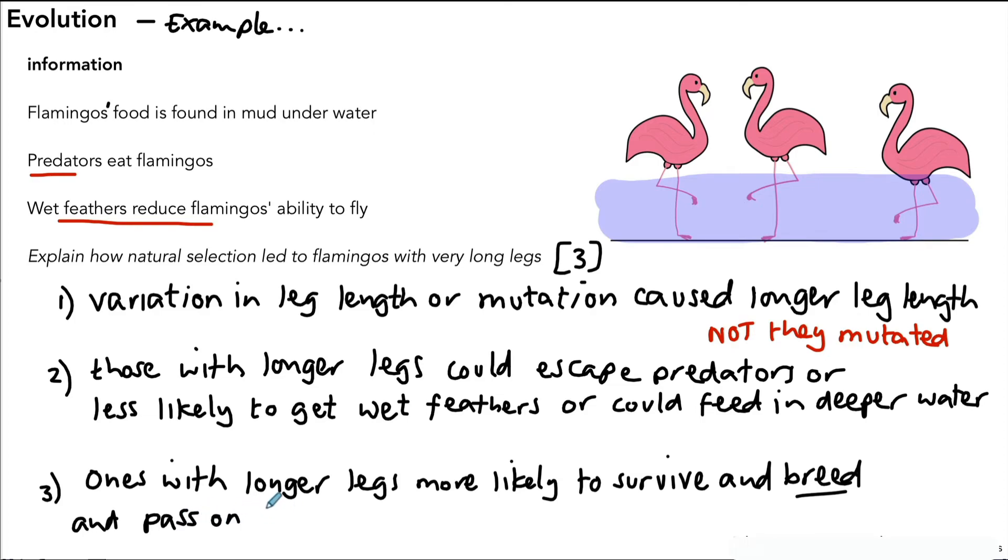So those are the three points that you would use to answer this question, and it's very important especially for point number two that we are very specific in terms of what advantage the living thing is getting, whether it's a plant, an animal, whatever it is. Don't just say the mutation or the variation allowed the organism to be better suited to the environment. You have to be specific, and in this example it was the flamingos with the longer legs.